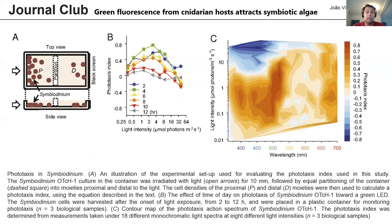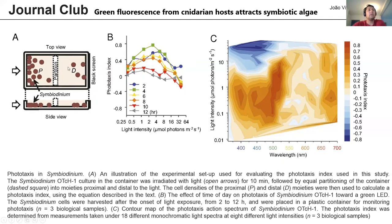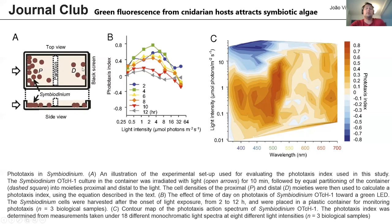Basically what they did was create a plastic vessel with a light source on one side and a black screen on the other side just to prevent reflections. They put algae cells on this plate and waited for some minutes. Then they added a silicone barrier in the middle and took all the cells from each side to quantify them. If cells accumulated on the light side they have positive phototaxis; if on the dark side, negative phototaxis.